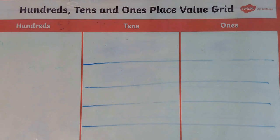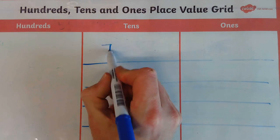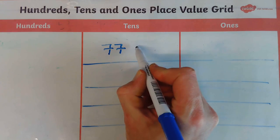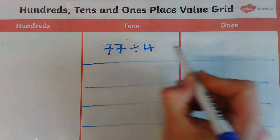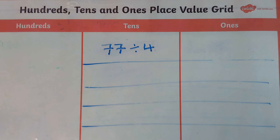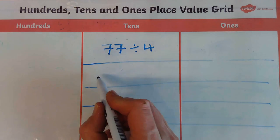Okay, let's try a second example. So this time I'm going to do 77 and I'm going to share it by 4. Okay, now again I can use the counters or I can draw them. So I'm going to draw them this time.